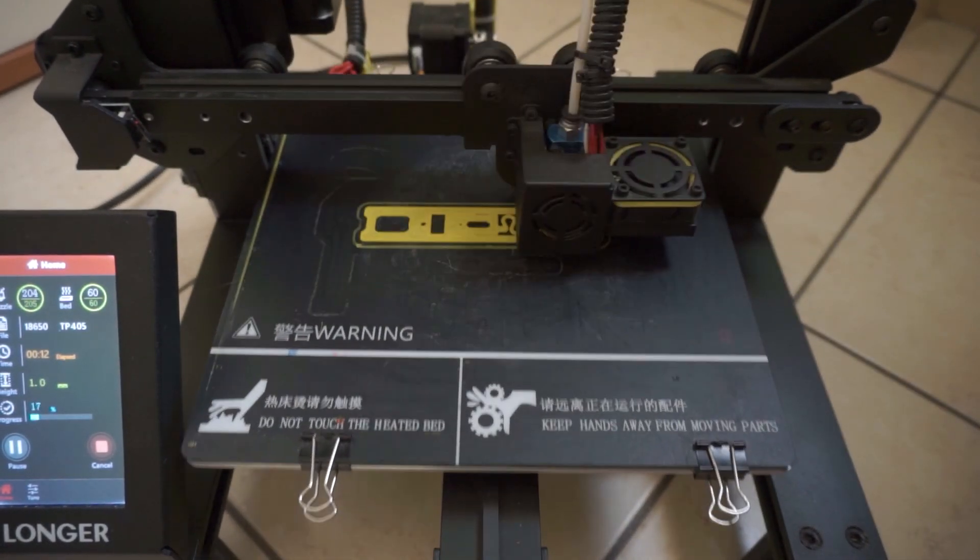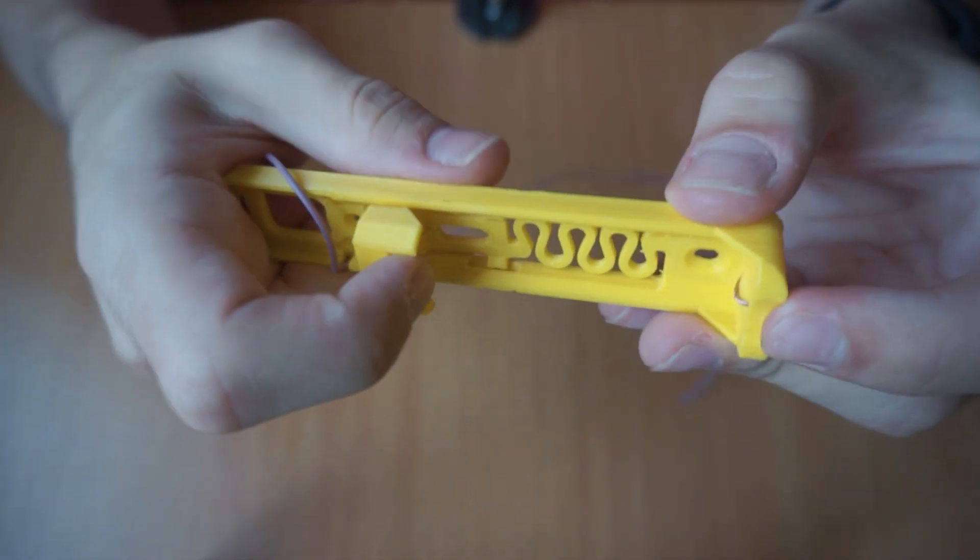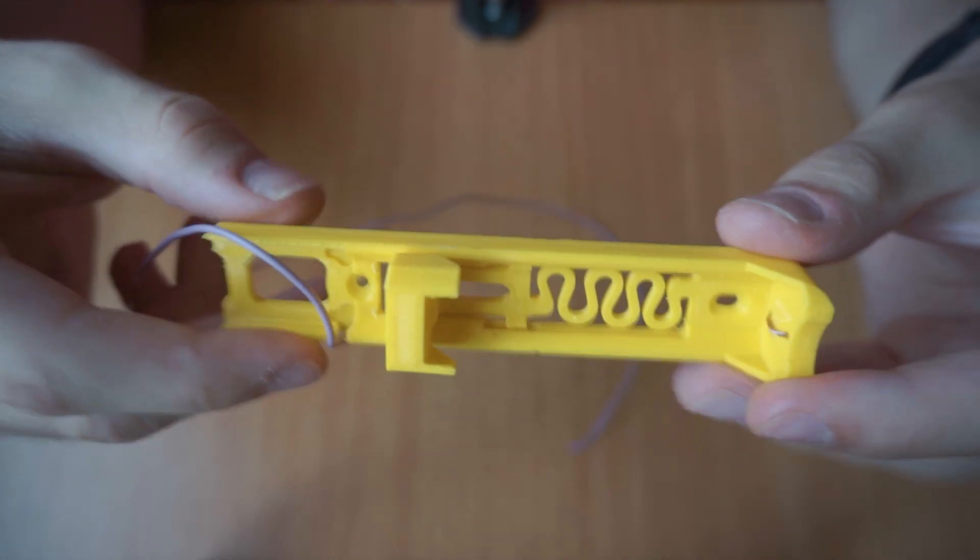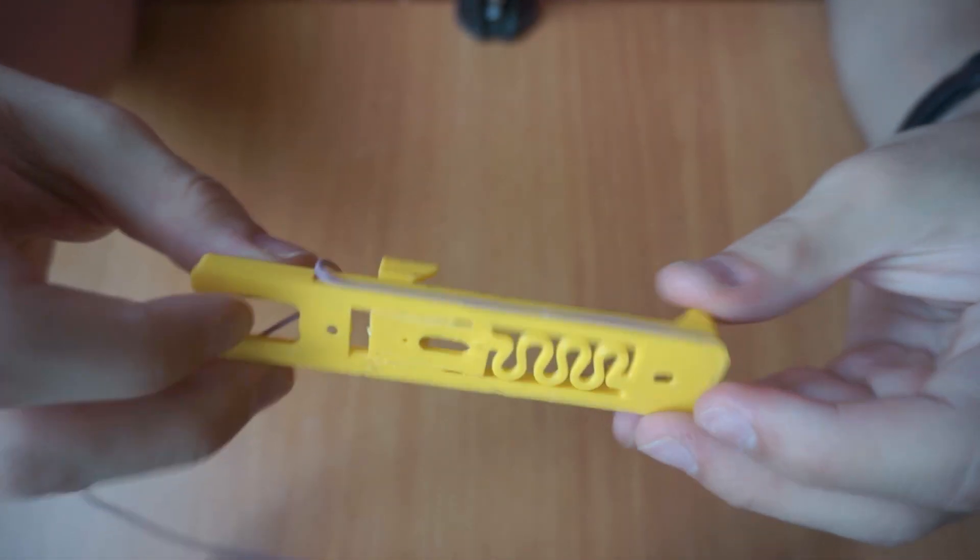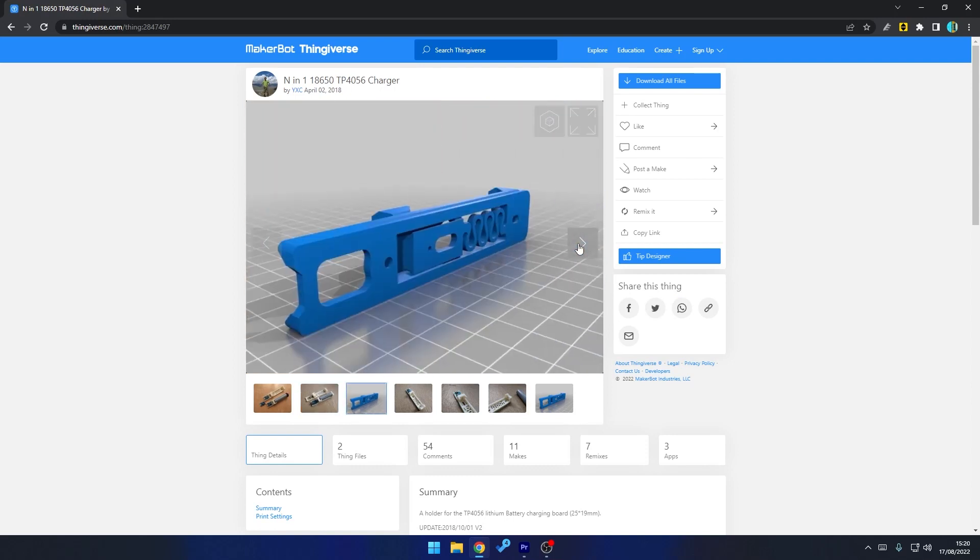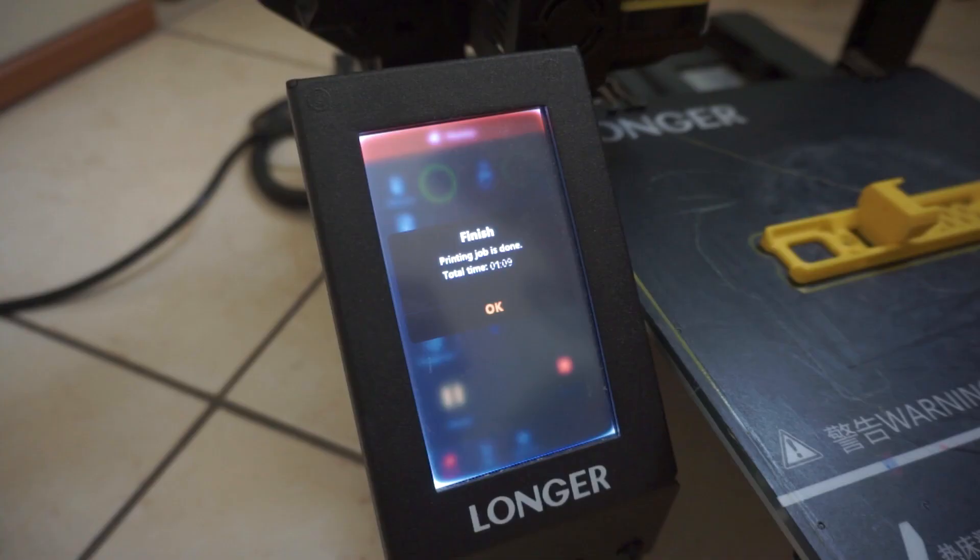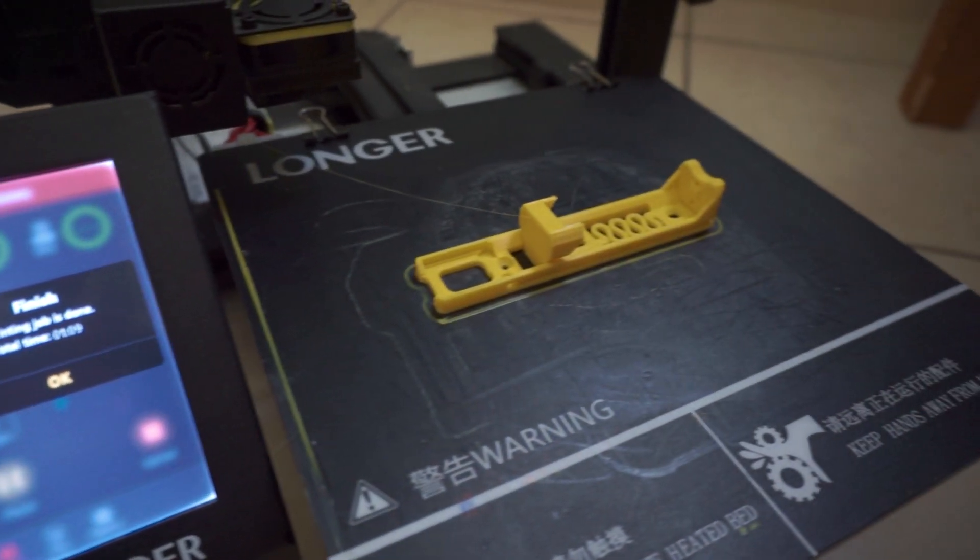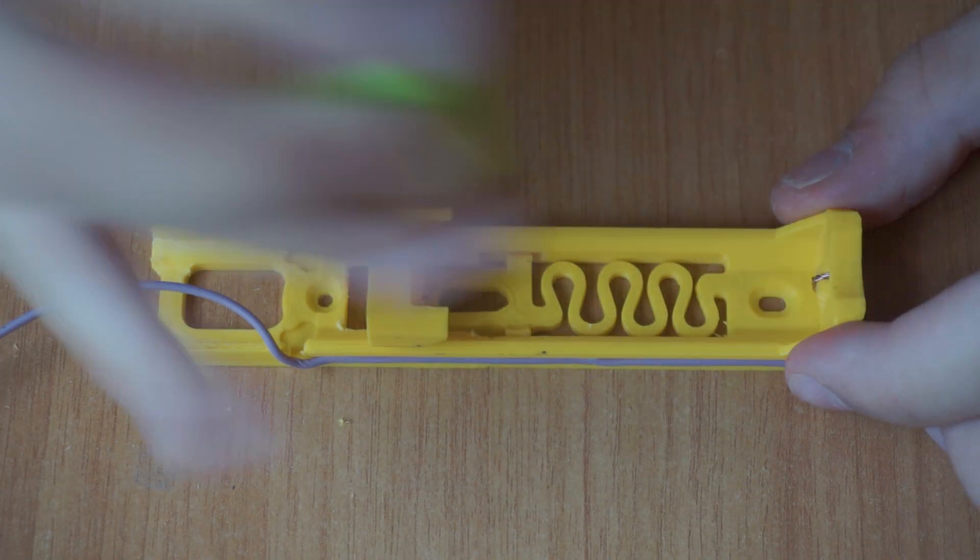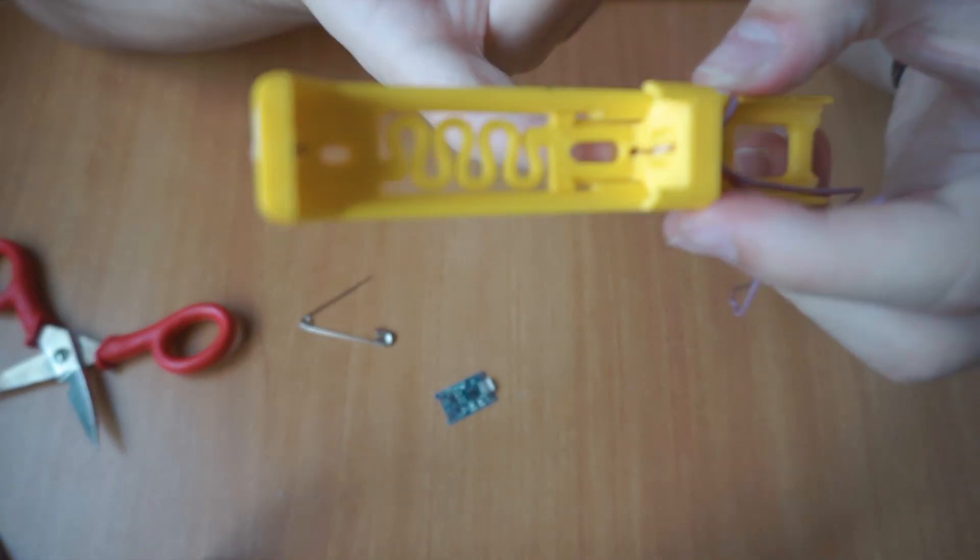The first step is 3D printing the piece. You can download the file from the links that take you to Thingiverse where user YXC has published it. Of course, you can arrange other solutions without 3D printing, but if you have a printer it's much better. The design is really well done—it prints in one piece and perfectly fits the TP4065 modules and 18650 cells.